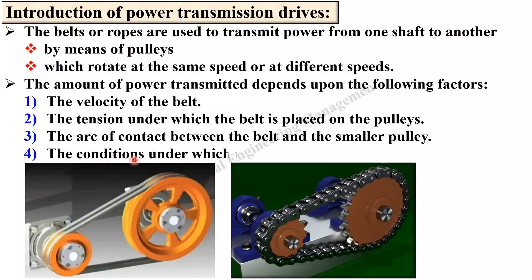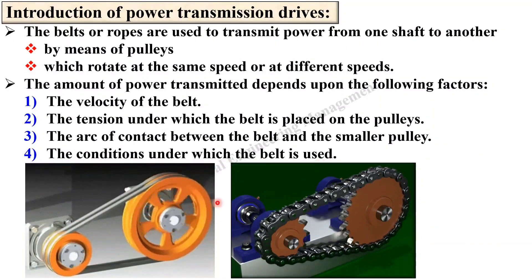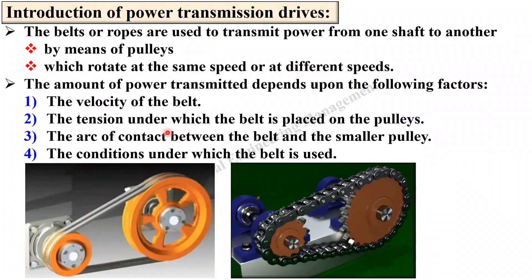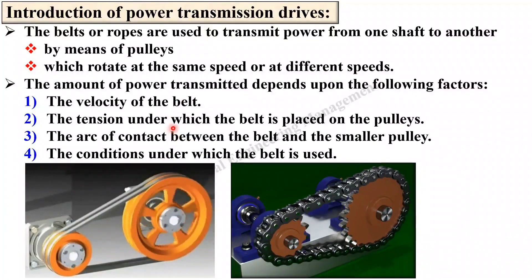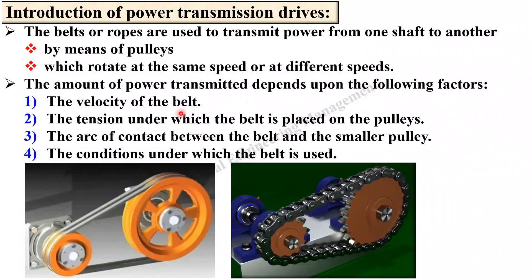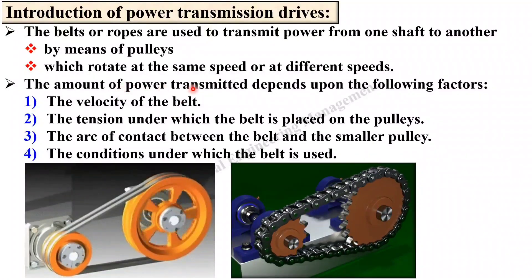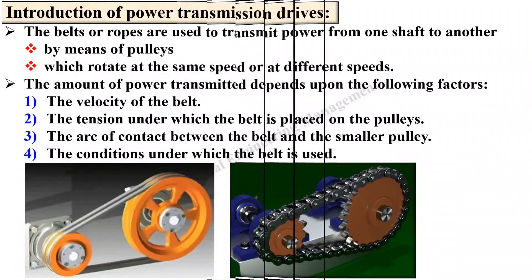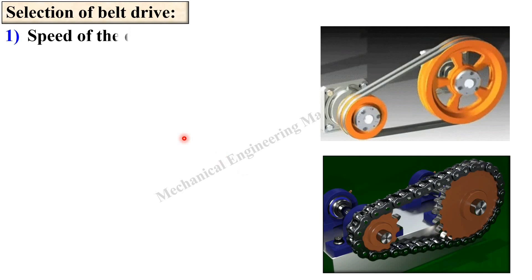The fourth factor is the conditions under which the belt is used. These are the four different parameters that the amount of power transmitted depends on. Next is the selection of belt drive.